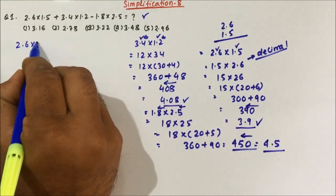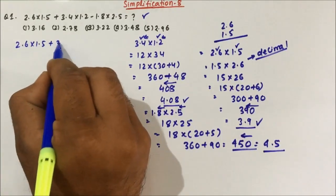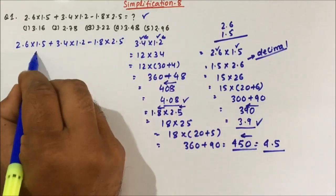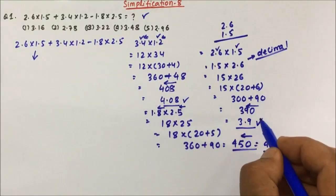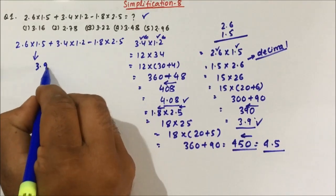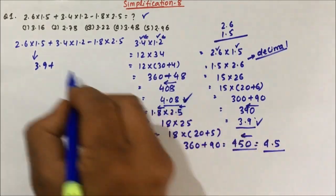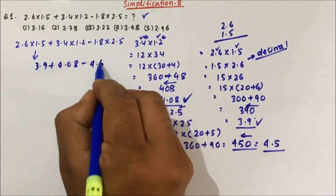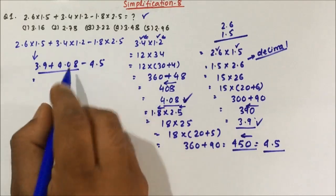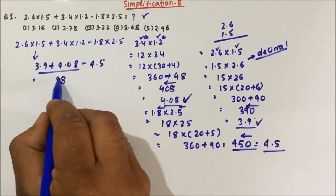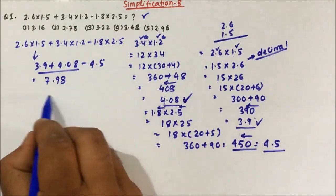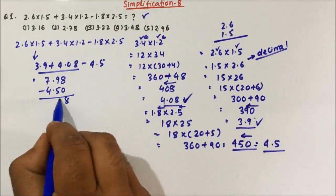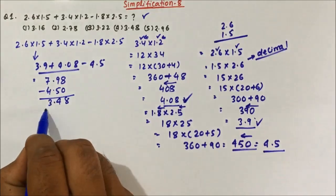Now combining: 2.6×1.5 + 3.4×1.2 − 1.8×2.5 = 3.9 + 4.08 − 4.5. First add 3.9 + 4.08 = 7.98, then subtract 4.5: 7.98 − 4.5 = 3.48.